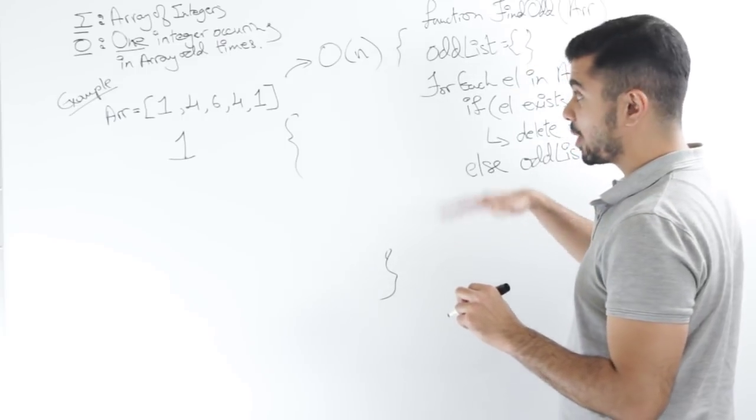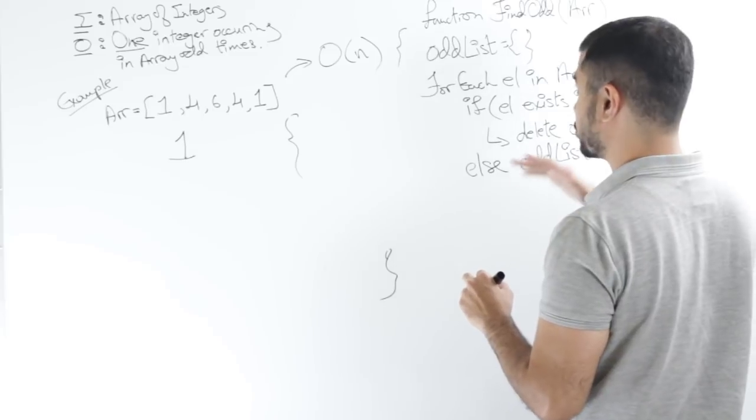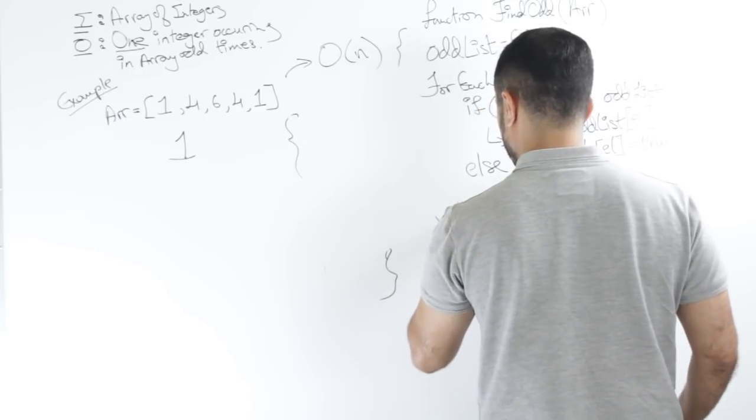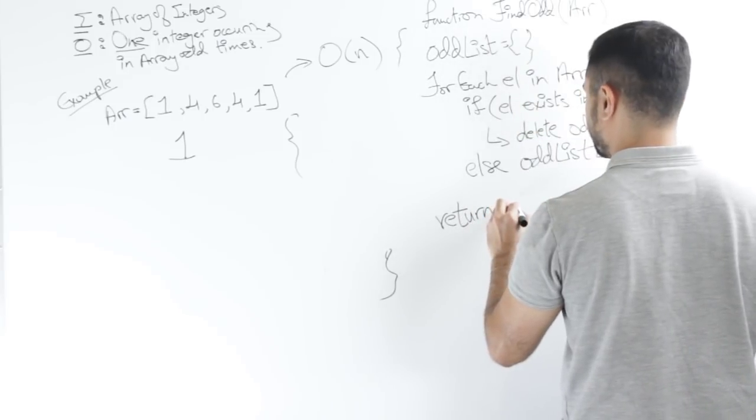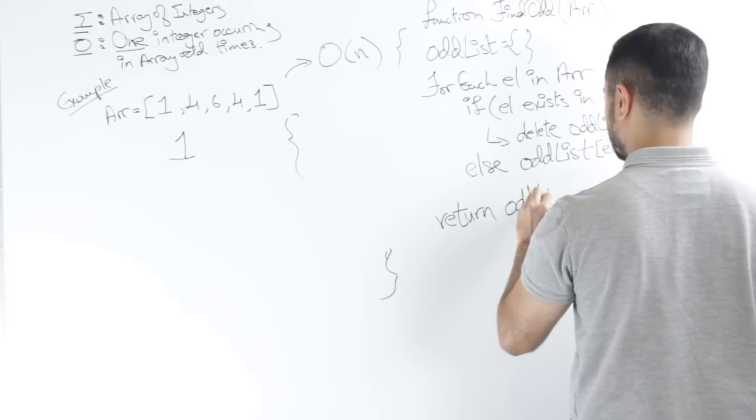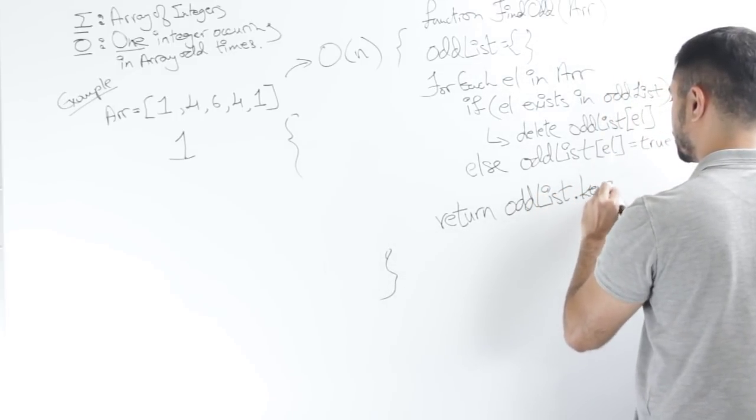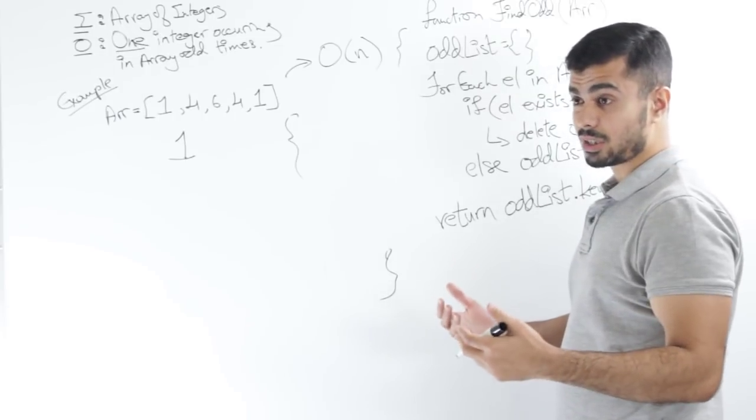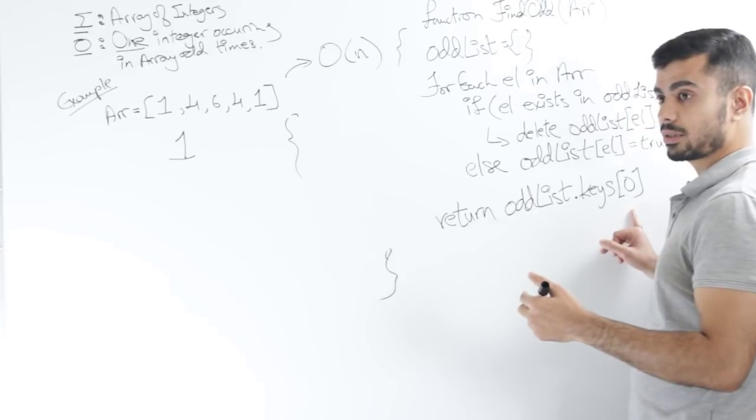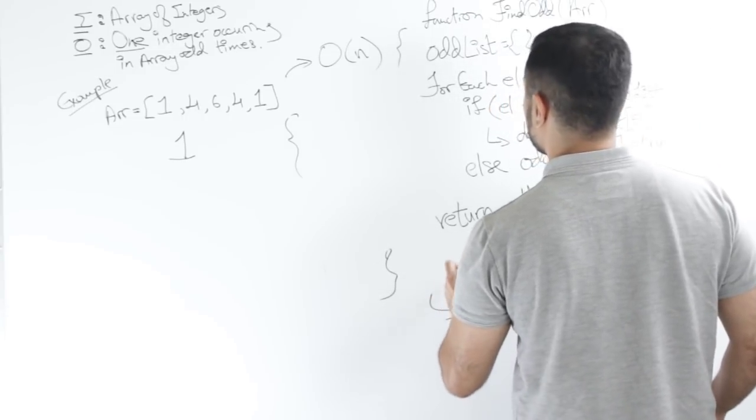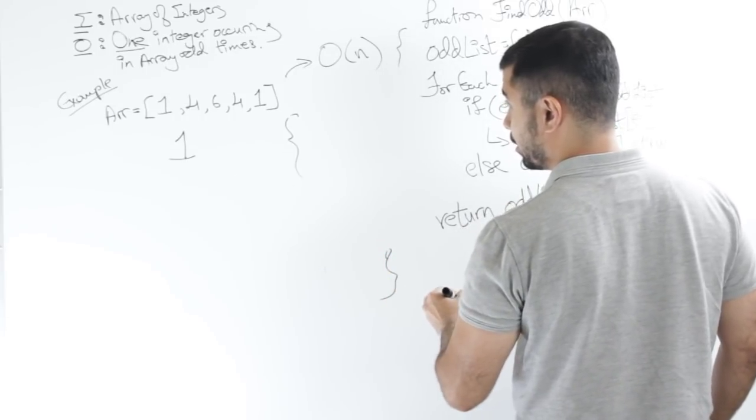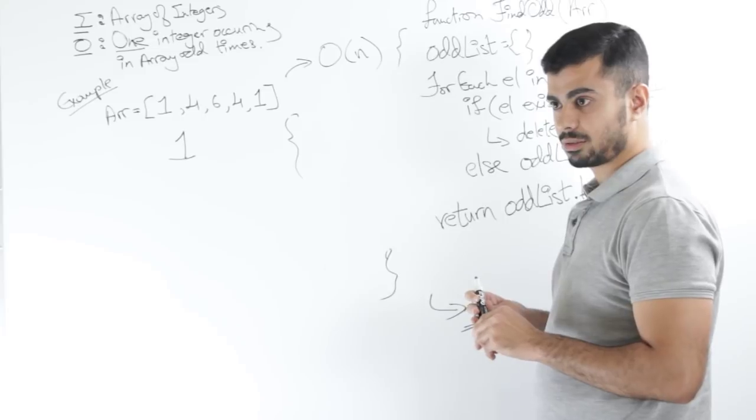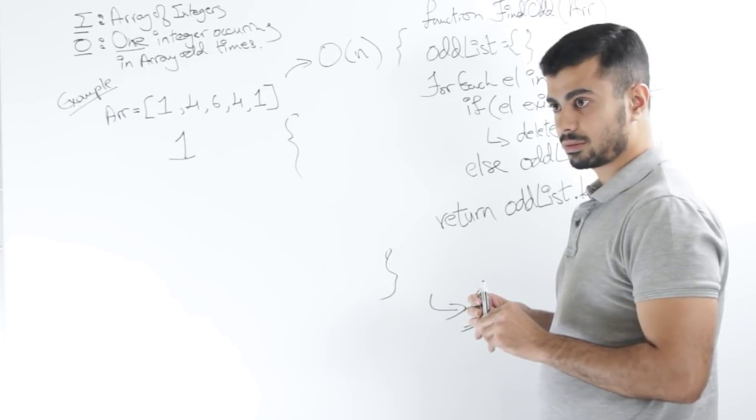After I go through this loop, based on our assumptions that there can be only one answer, there should only be one integer left at the end in the oddList. So I will return oddList.keys. Let's say oddList.keys is returning me an array of all of its keys, and I'm looking for index zero in it. This should yield the number 6. So the function looks good to me. The time and space complexity is also optimized. I guess we have our answer right here.